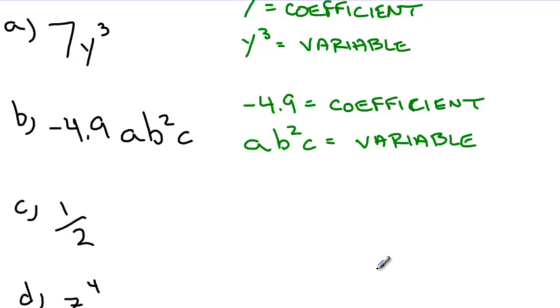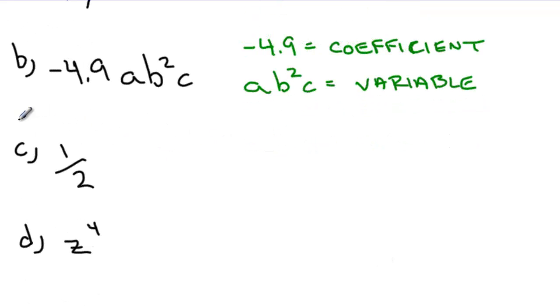So when we're looking at algebraic terms, the variable piece can be made up of more than one letter. If I look at part c,